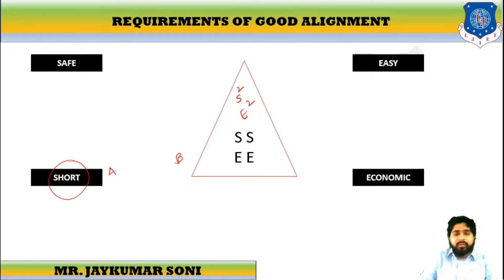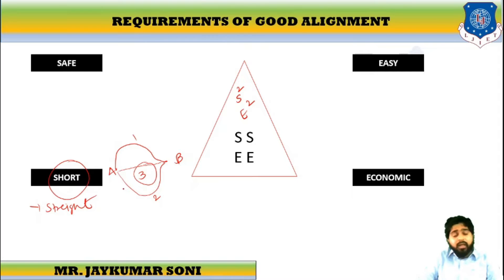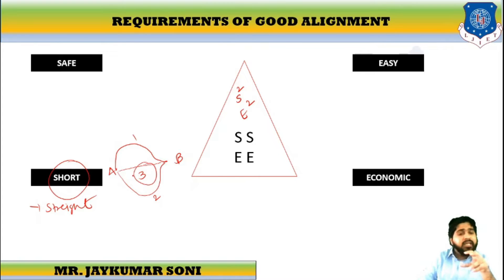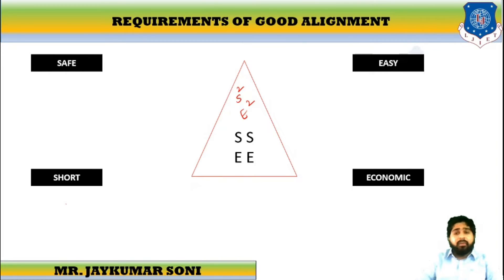If we discuss Short alignment — say this is place A and place B — the shortest route is the straight route. It is desirable to have a short alignment between two terminals because it would be easiest, least time-consuming, and cheapest. Time will be saved, cost will be saved, and comfortability will be there.